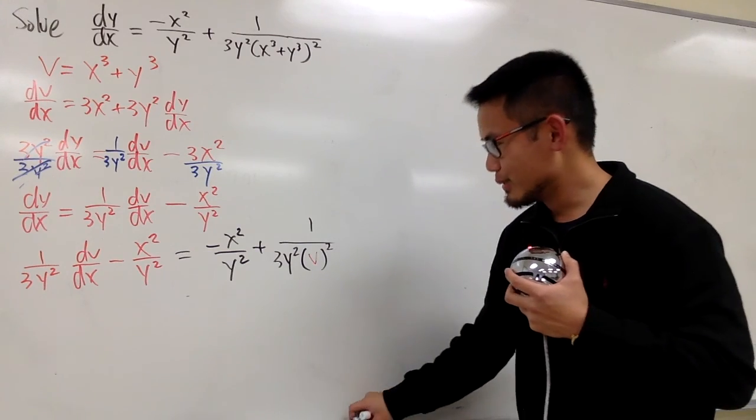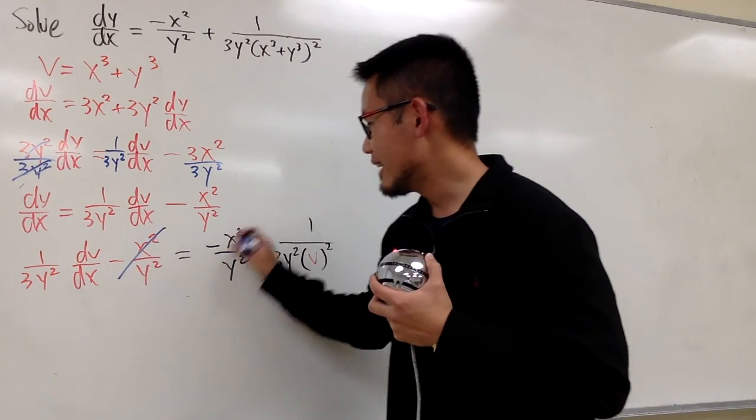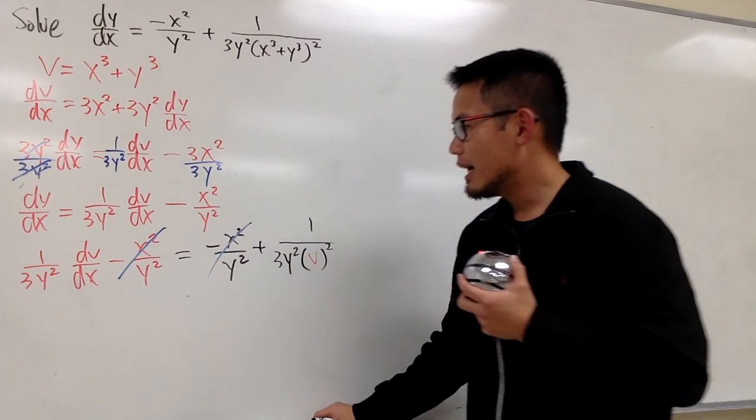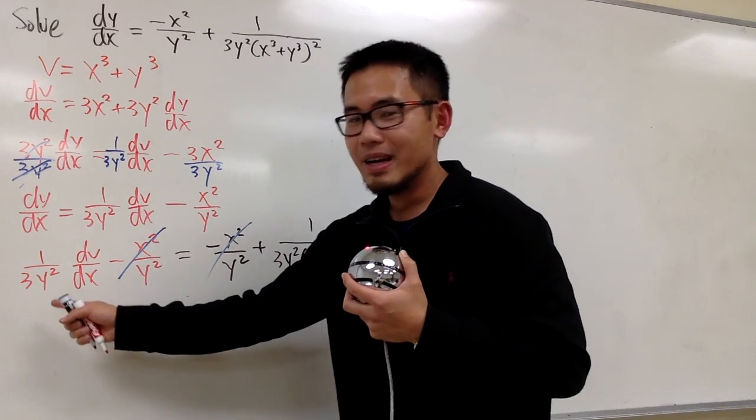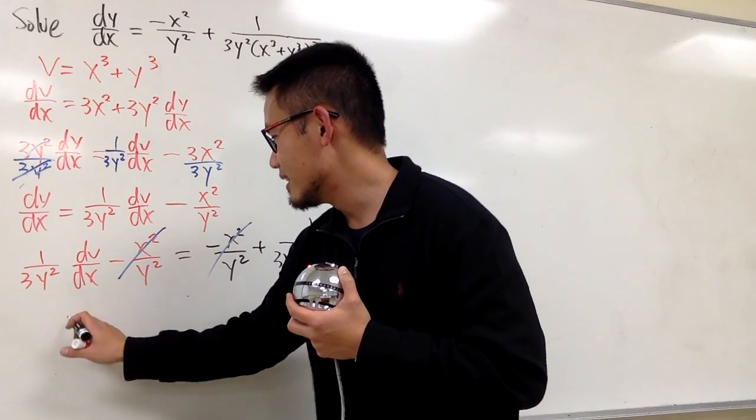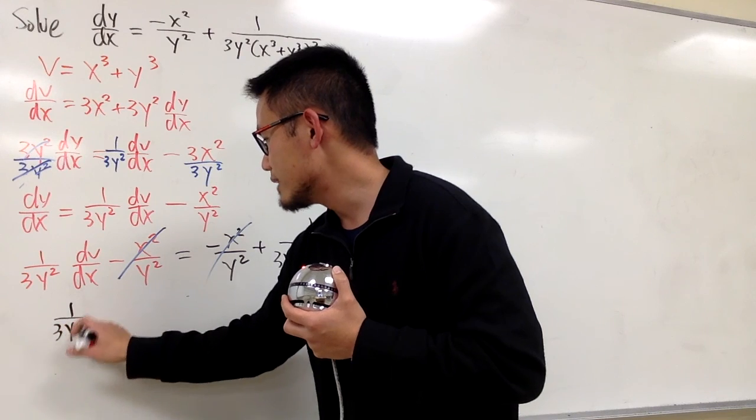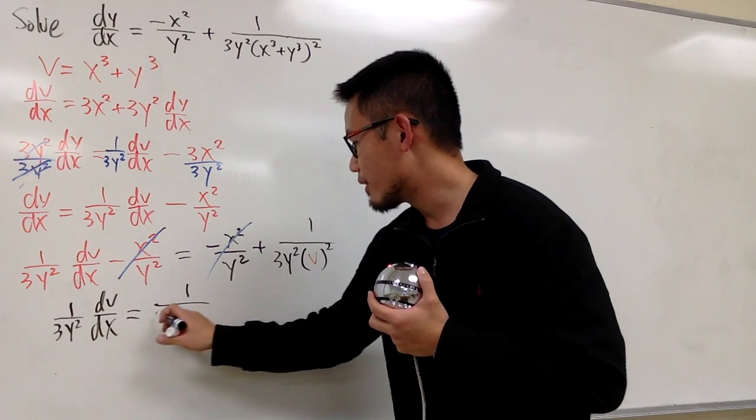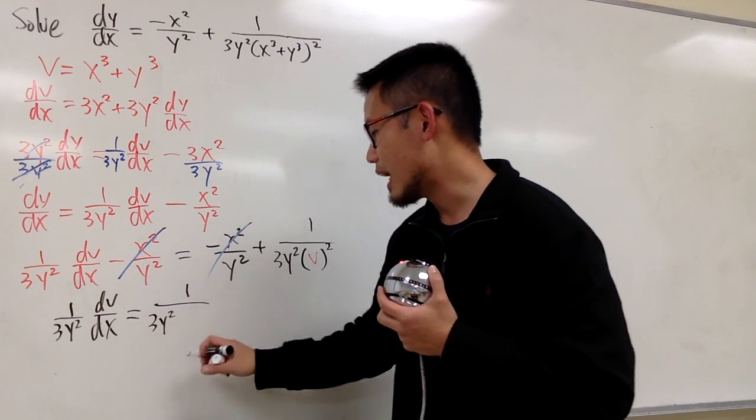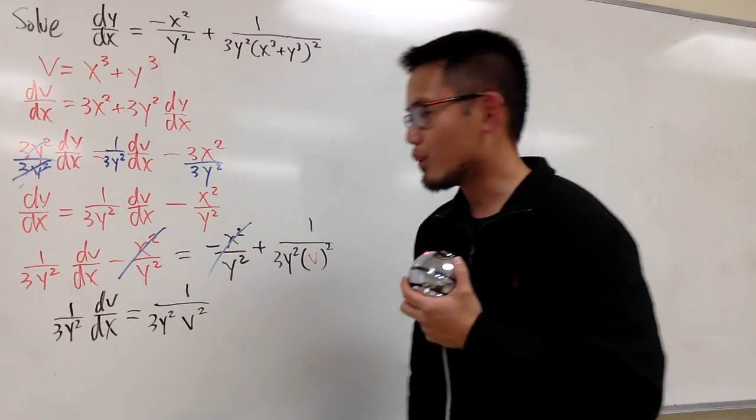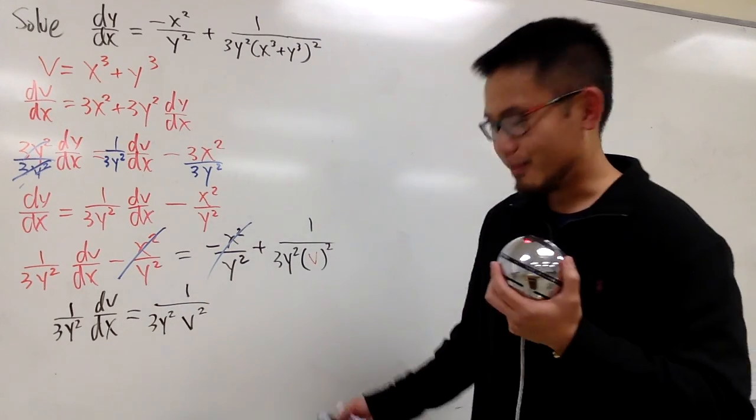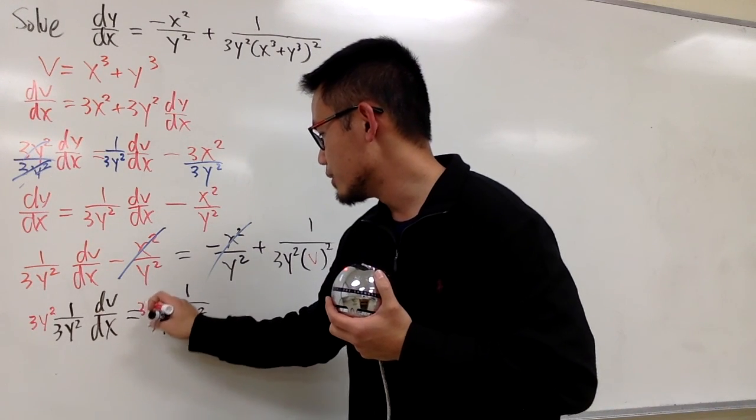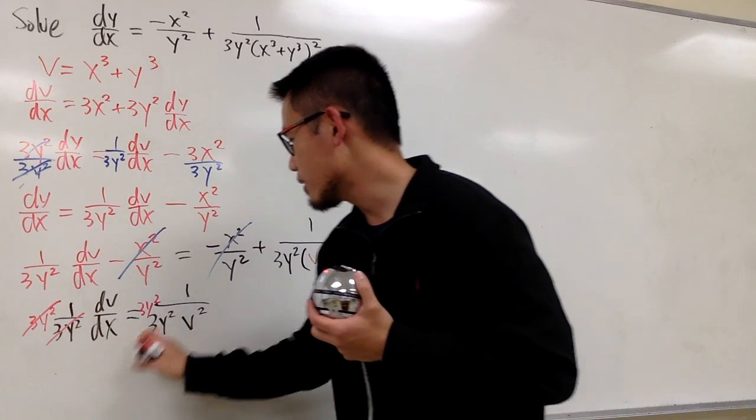And what do we have? Look at this and that cancel out, right, because it's the same thing on both sides. And from here, let me just write down these extra steps for you guys. This is just 1 over 3y squared dv dx, and on the right-hand side, we have 1 over also 3y squared in the denominator, and then v to the second power. What happened to this and that? Of course, they also cancel each other out if you just multiply both sides by 3y squared. 3y squared, this and that will cancel, this and that will cancel.